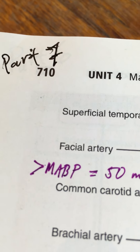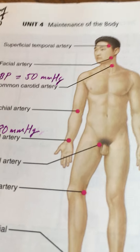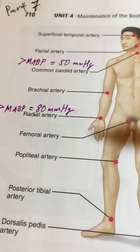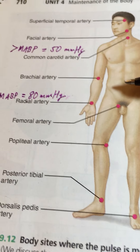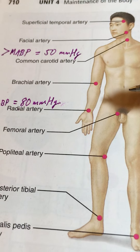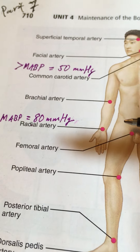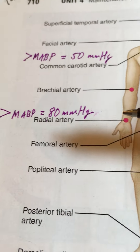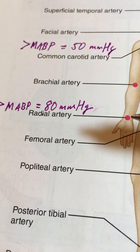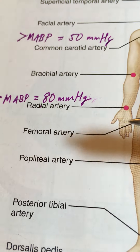We're at part 7 now, the blood vessels of the cardiovascular system, on page 710. We were looking at pulse points. In emergency medicine, you might come across someone who is not conscious, and you check for a pulse at the wrist. But if they don't have a mean arterial blood pressure of 80, they won't have a pulse there.